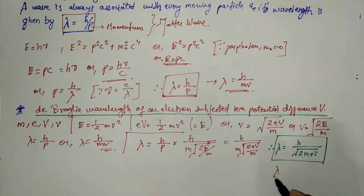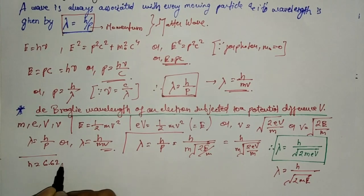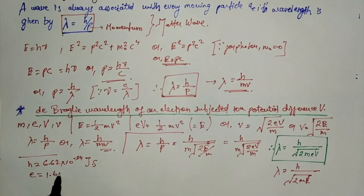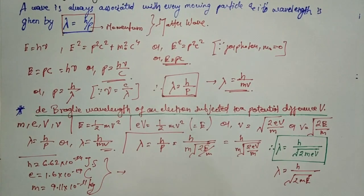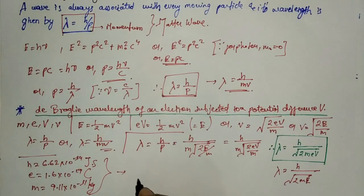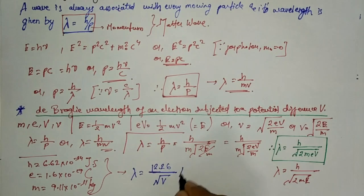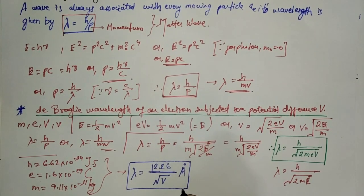We can also write this as lambda = h / √(2mE). Substituting the values h = 6.62×10⁻³⁴ J·s, e = 1.6×10⁻¹⁹ C, and m = 9.11×10⁻³¹ kg, the final result is lambda = 12.26 / √V angstrom, where V is the potential difference in volts.